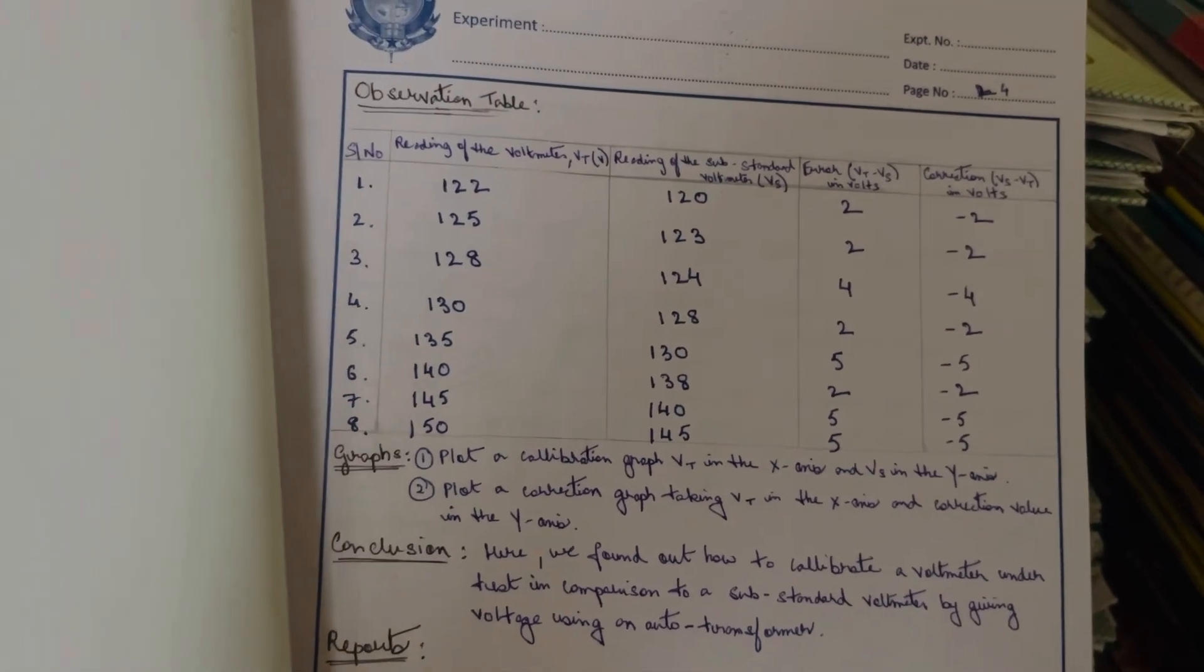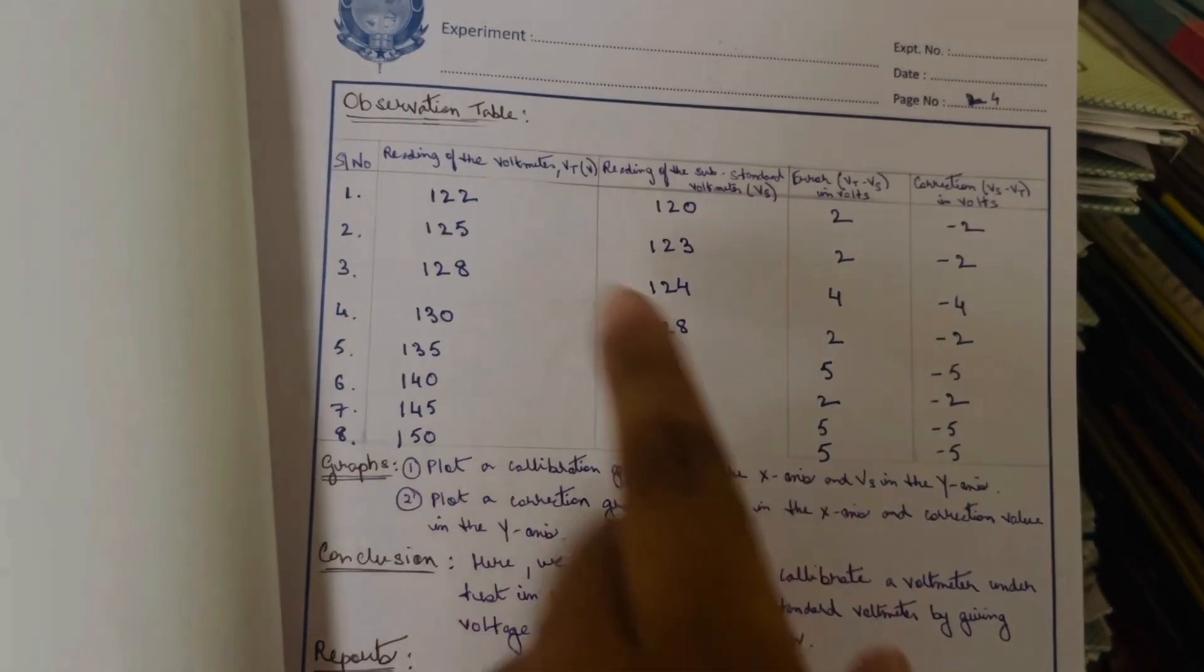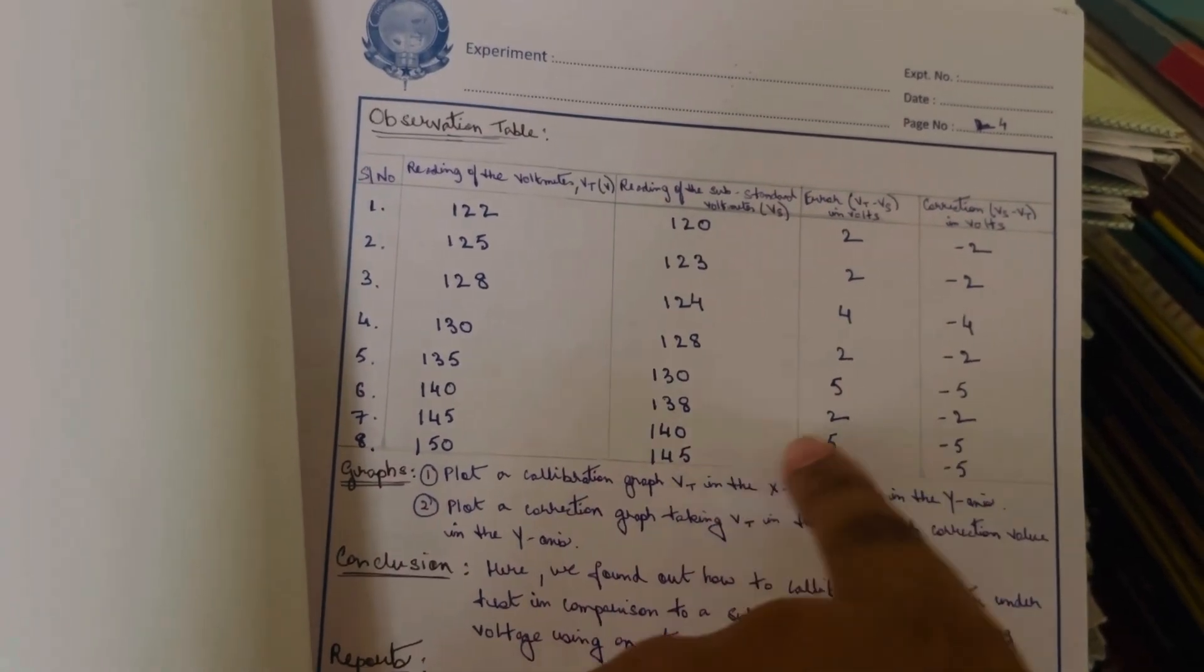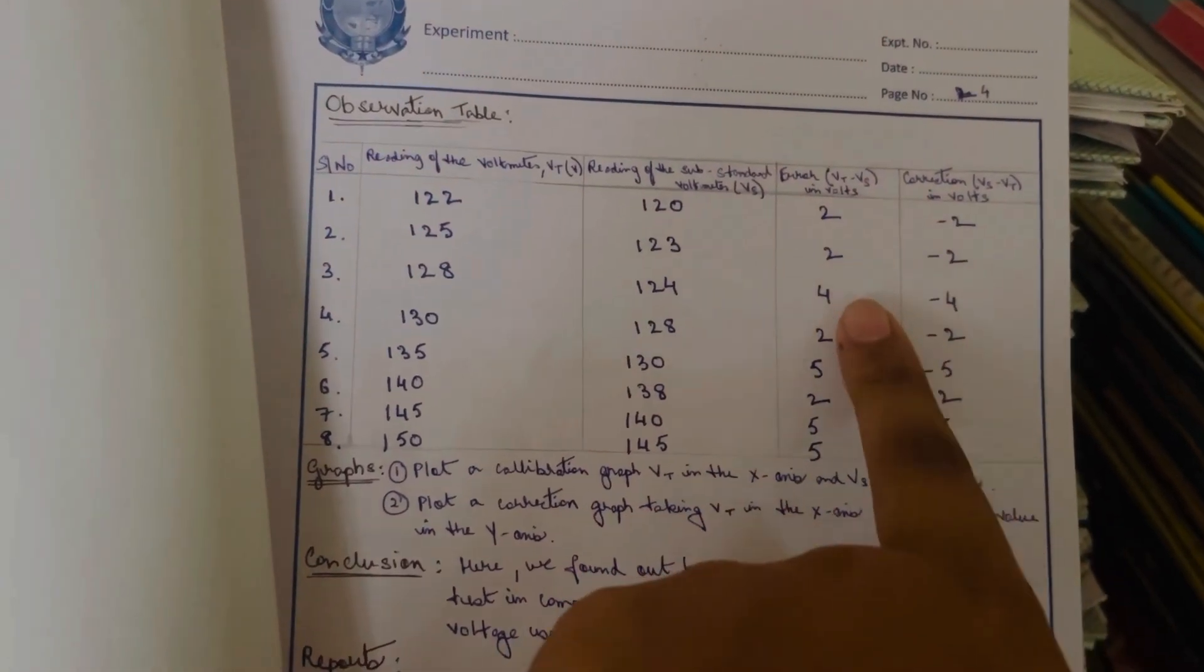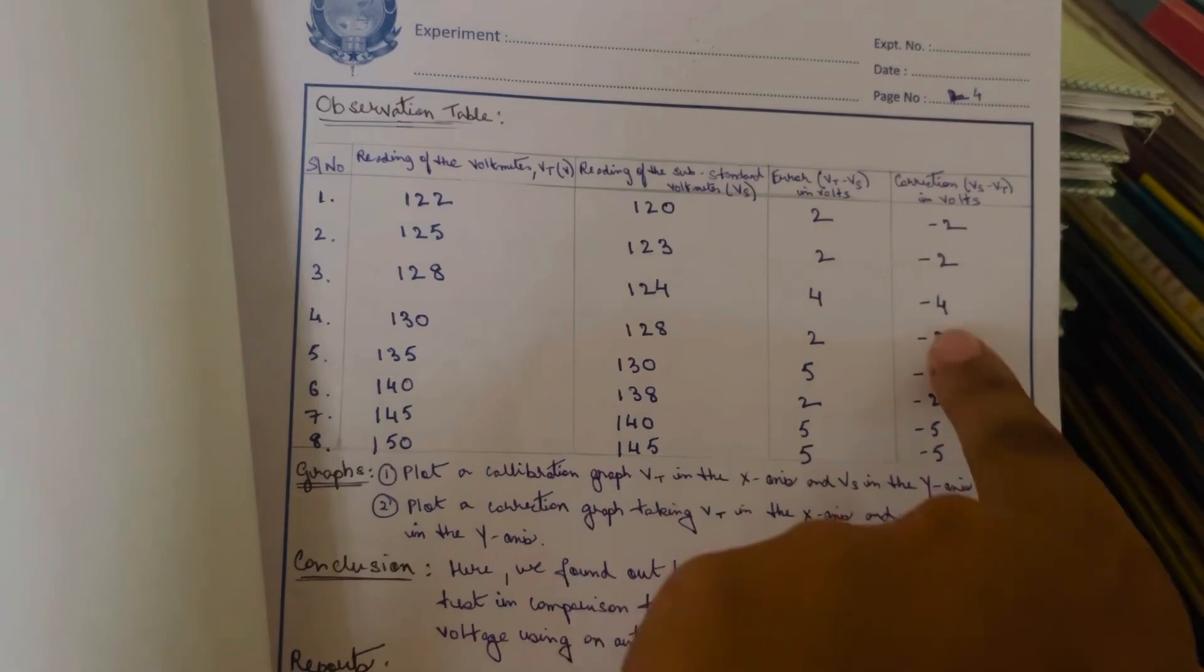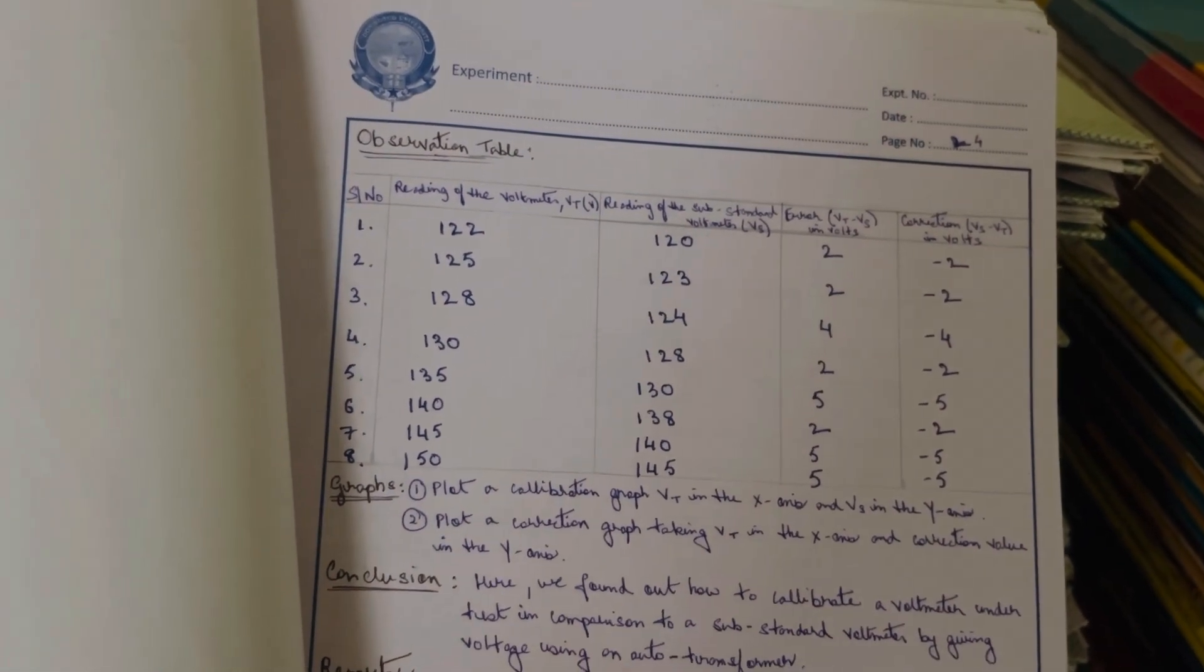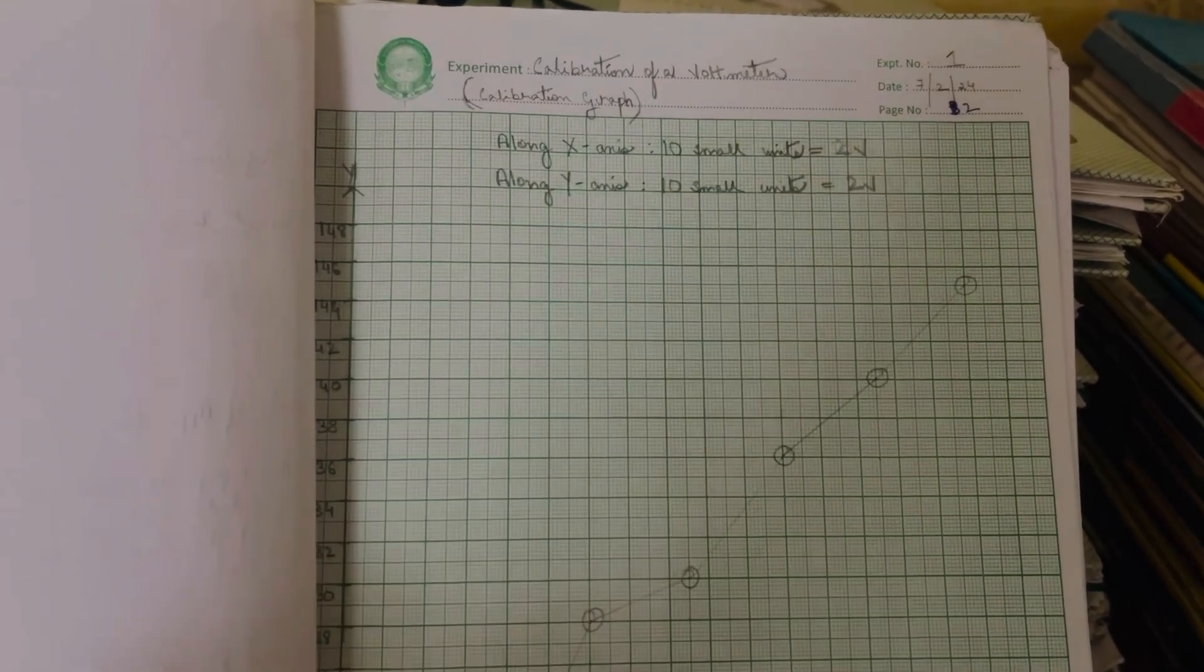This is the observation table. This is the value of BT and this is the value of BS. This is BT minus BS for error and this is the correction, BS minus BT.